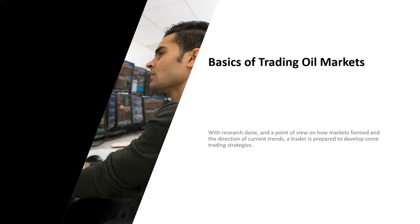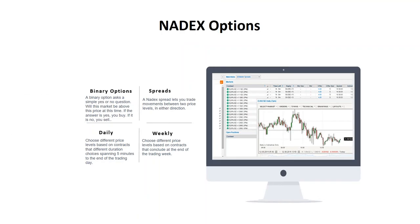Now that we've looked at some of the sources of our data and the cadence or calendar of events, let's look more closely at some ways to trade oil markets here on Nadex. Nadex certainly offers a variety of different options to allow a trader exposure to oil markets. A binary option asks a simple yes or no question: will this market be above this price at this time? If you believe the answer is yes, you buy; if it's no, you sell. A Nadex spread lets you trade movements between two price levels in either direction. Both of these types of options allow you to cap your risk ahead of time so that you know exactly what you have on the table as you enter a position. You can select from a variety of different time horizons that should match your trading plan, your goals, and your risk tolerance.